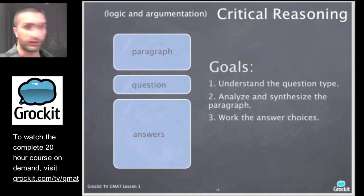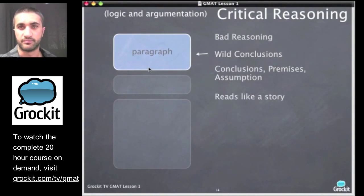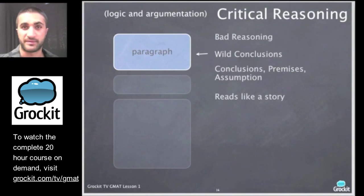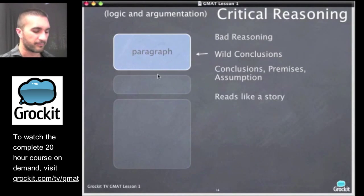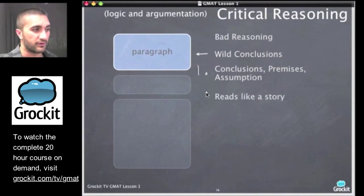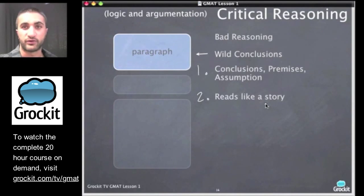The paragraph on critical reasoning questions can often have poor reasoning — it may make wild conclusions based on what seem like ridiculous premises. But it's important to disregard your own agreement or disagreement and simply address it based on the information given. Paragraphs tend to come in two flavors: either there's a conclusion, premise, and assumption, or they read like a story. We'll pull those pieces out and dissect accordingly.